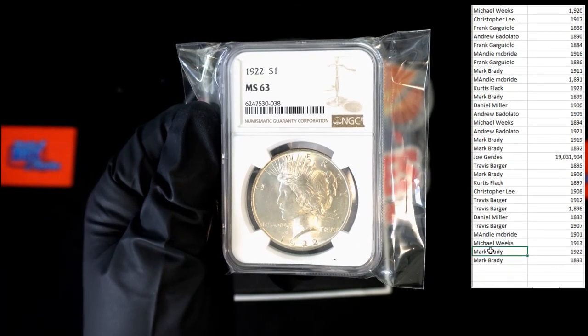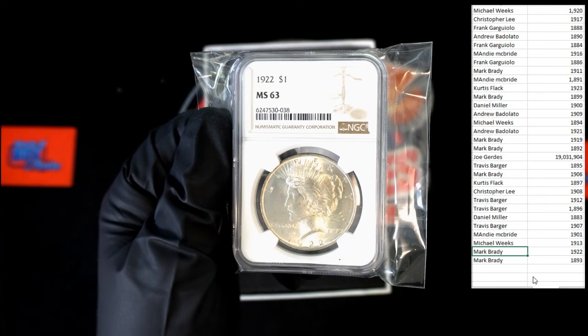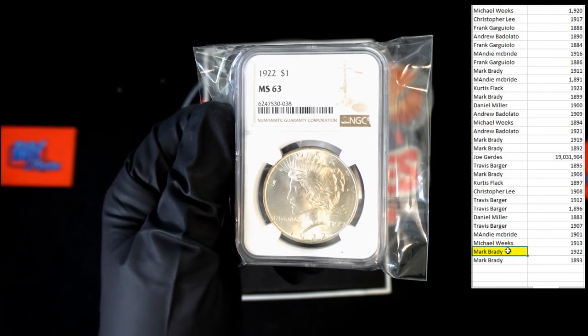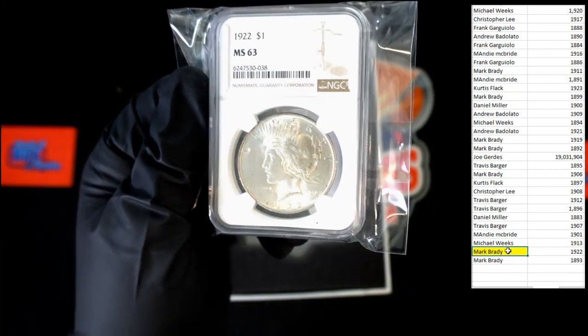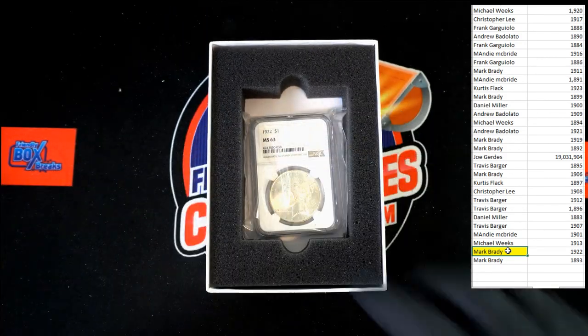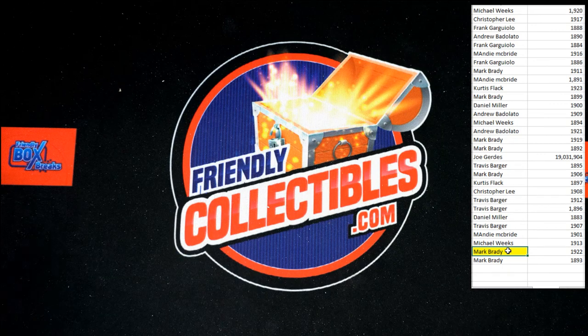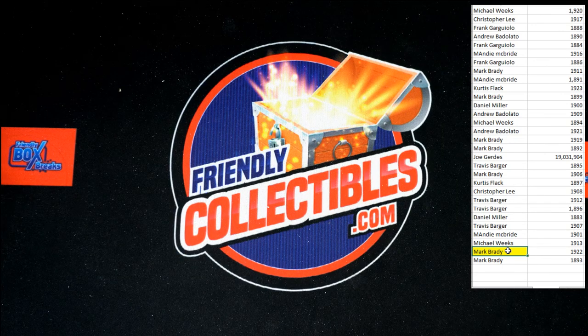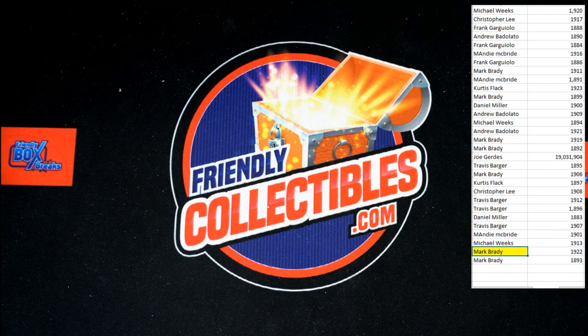That will be going to, well let's take a quick peek. Mark B. Mark B, 1922 right there. Congratulations Mark B. Very nice looking coin right there. All right, on to the next one guys. 102 is coming up next.